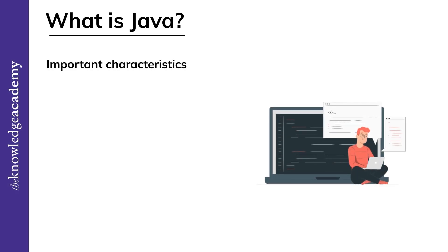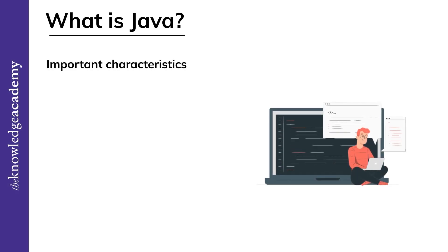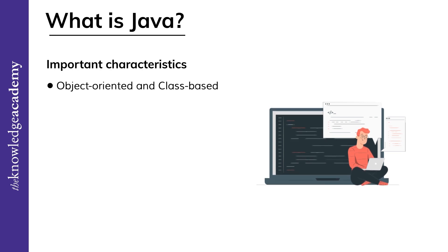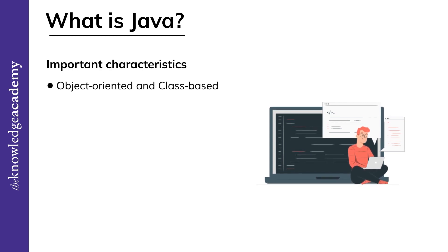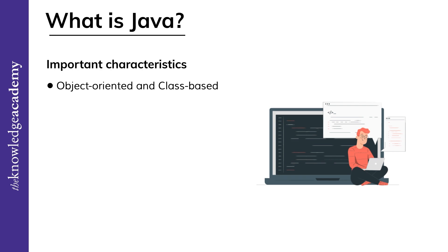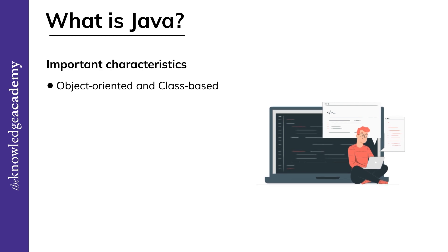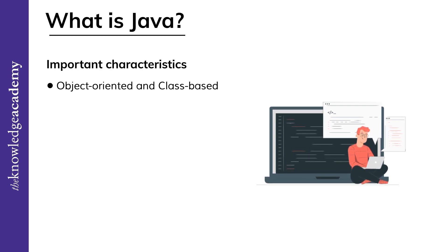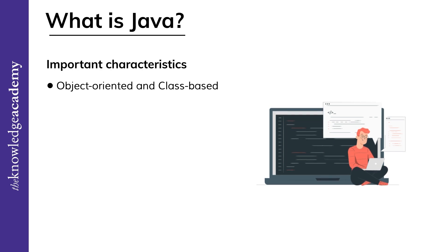Here are some of the important characteristics of Java. Firstly, Java is object-oriented and class-based. The Java environment permits object grouping, which can be used in other projects, improving productivity.